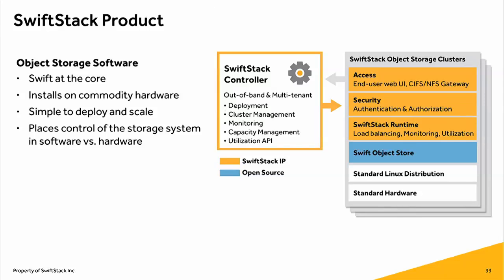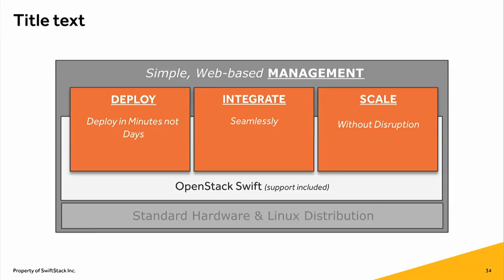Our product — we work on Swift, that's what we do as a company. We have a lot of the core team members, including the project technical lead. We try to rally developers in the ecosystem and build a deployment tool around Swift. It's Swift at the core, runs on commodity hardware. We try to make it as easy to deploy and scale as possible, and we want the control of the storage system to be in the software, not bundled with hardware. We provide deployment, integration, and scalability.